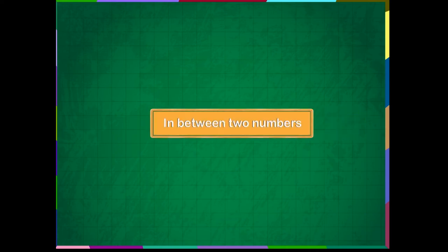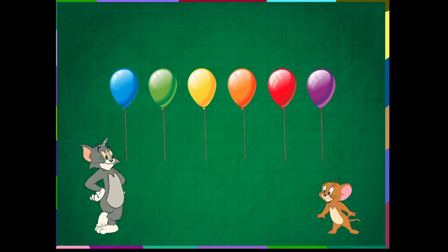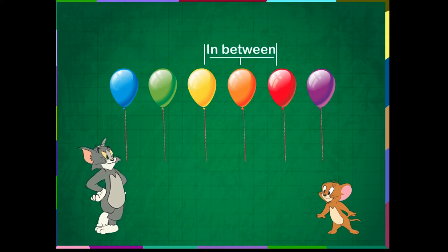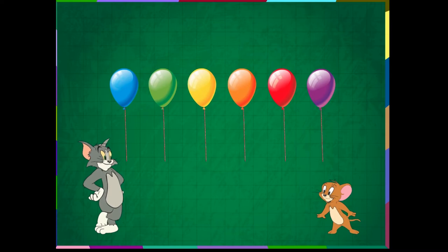In between two numbers. The green balloon is in between the blue and the yellow balloons. The orange balloon is in between the yellow and the red balloon.